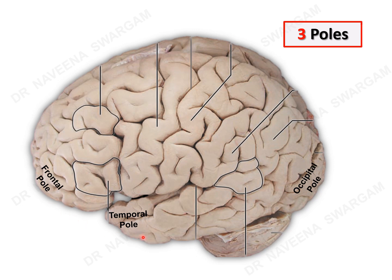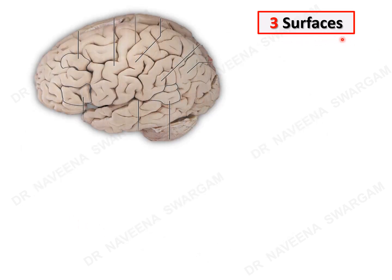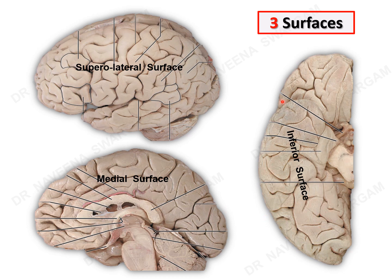The three surfaces of each cerebral hemisphere are: the largest superolateral surface on the lateral aspect; the medial surface on the medial aspect with the corpus callosum; and the inferior surface on the inferior aspect, which is further divided into two parts — the smaller anterior orbital surface and the larger posterior tentorial surface — by the stem of the lateral sulcus.